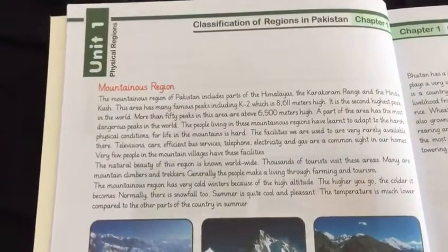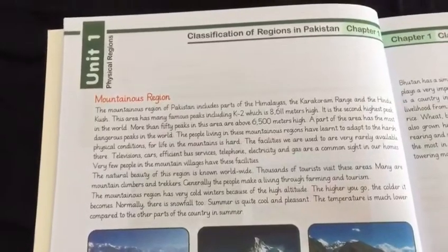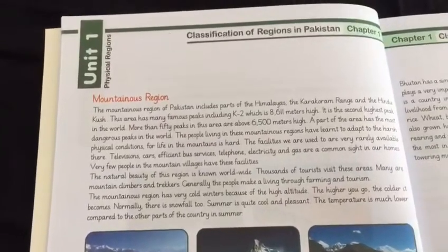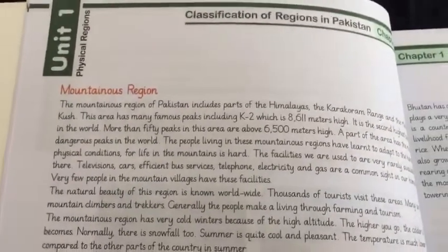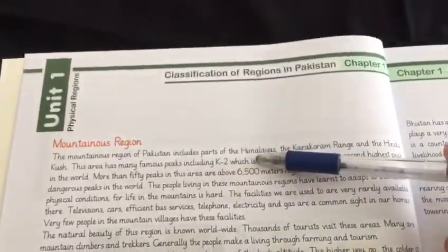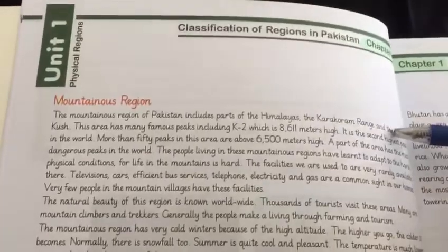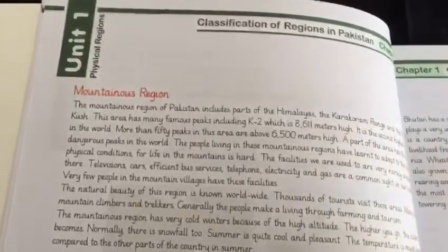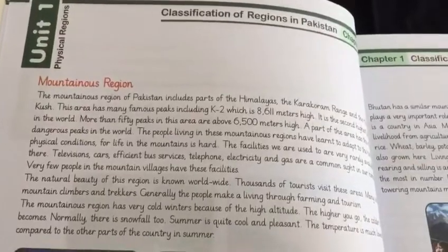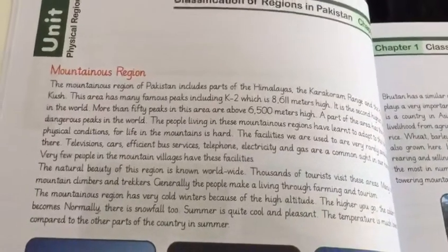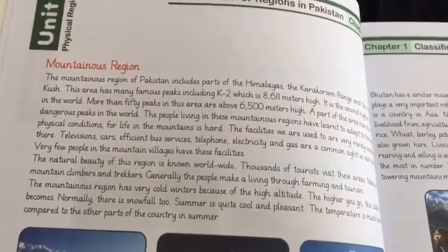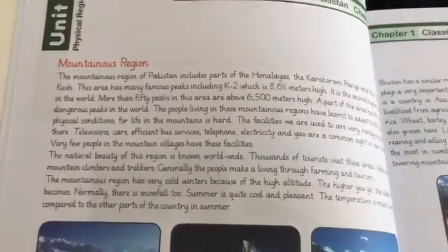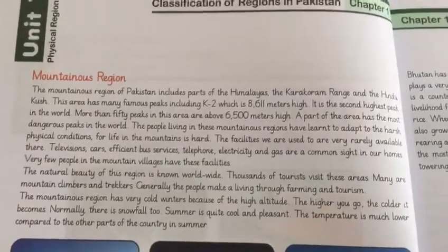The mountainous region of Pakistan includes parts of the Himalayas, the Karakoram Range, and the Hindu Kush. This area has many peaks including K2, which is the second highest mountain in the world at 8,611 meters. The first highest mountain is Mount Everest, while K2 is the second highest peak in the world.